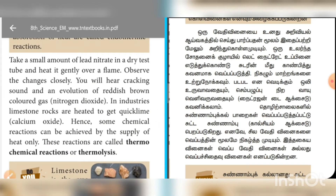Take a small amount of lead nitrate. We will heat it up in a dry test tube. This produces a reddish-brown colored gas — nitrogen dioxide.